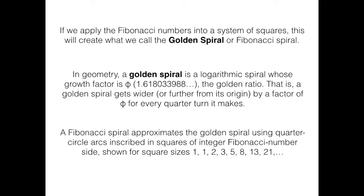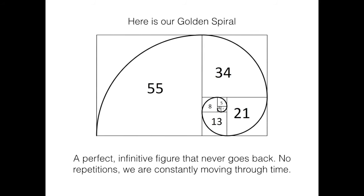Shown for square sizes 1, 1, 2, 3, 5, 8, 13, 21, and so on. Here is our golden spiral, a perfect, infinitive figure that never goes back, with no repetitions, we are constantly moving through time.